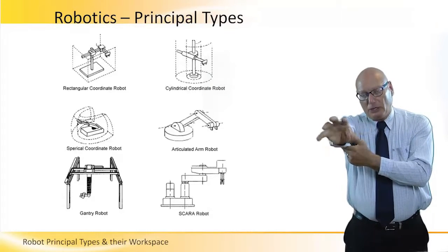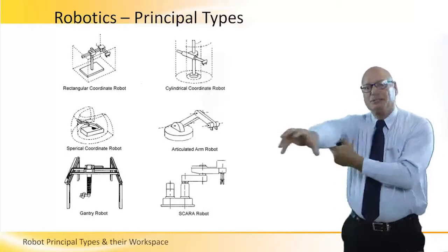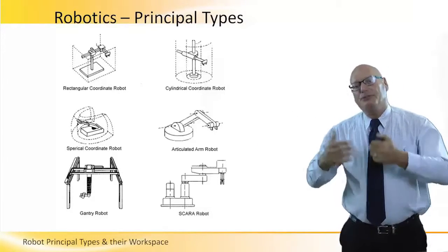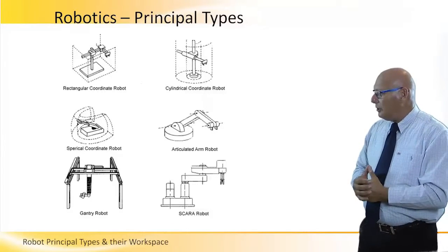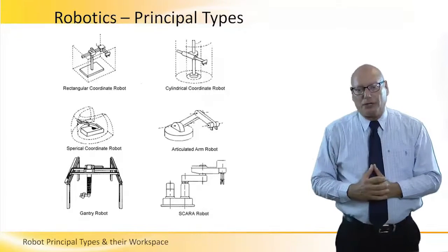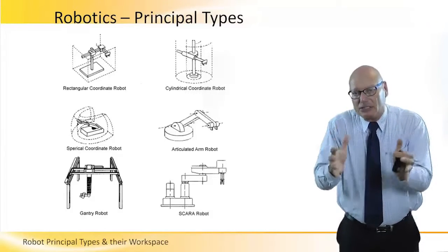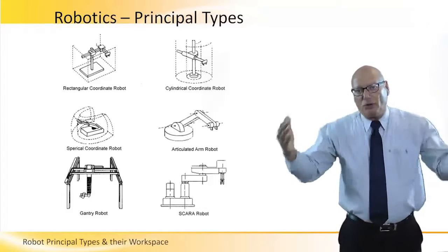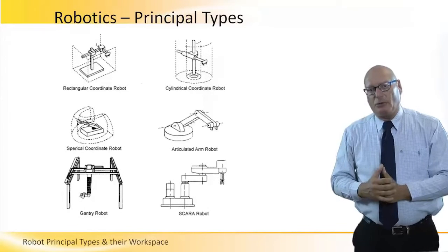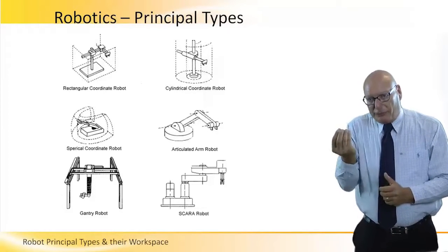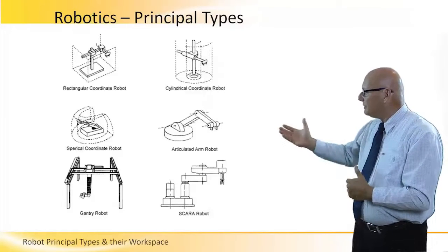Going down to the spherical coordinates robot: we have an arm with pitch, roll, and yaw of the end effector, and we can rotate left and right almost 360 degrees, giving a spherical working envelope. Then we have the gantry robot, which is very similar to the rectangular one, except in the gantry robot the working envelope can be wider, bigger, and taller — the end effector can go outside the mechanical structure of the robot.